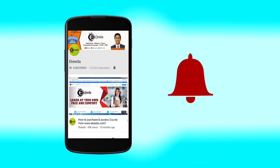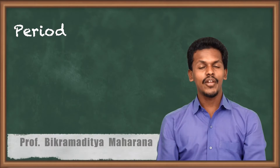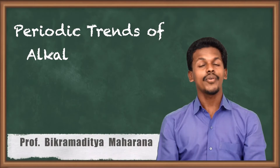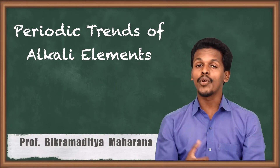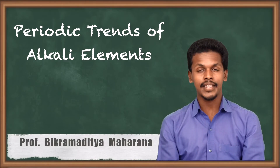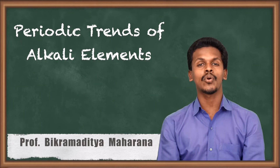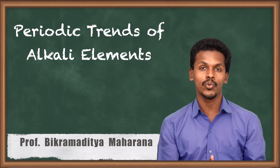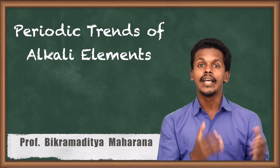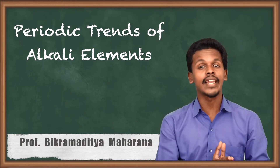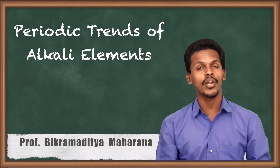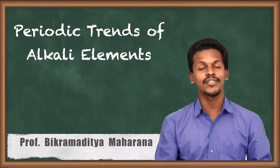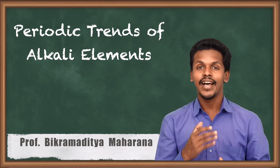Click the bell icon to get the latest videos. Now we are going to talk about the periodic trends of the alkali metals. In the previous lecture, we got to know that s-block elements are divided into two parts: the alkali metals and the alkaline earth metals. So now we are going to talk about the periodic trends of the alkali metals.